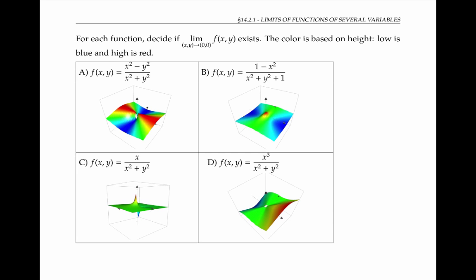Sometimes it's possible to get an intuition about whether a limit exists by looking at the graph of the function. For each of these functions, try to decide if the limit as (x, y) goes to (0, 0) of f of x, y exists. The graph can help you decide — the color is based on height: large z values are colored red, smaller z values are colored blue, and green is somewhere in between. For some functions the value doesn't exist at (0, 0), which is why the graph has a hole. Once you've thought about which functions have limits and which don't, please continue with the video.